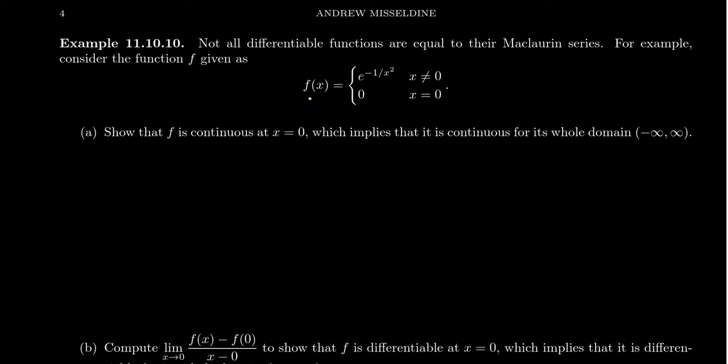So case in point, consider the function f of x which is given by the following rule: e to the negative one over x squared when x is not zero, and it's equal to zero when x equals zero. So let's explore this function for a moment.